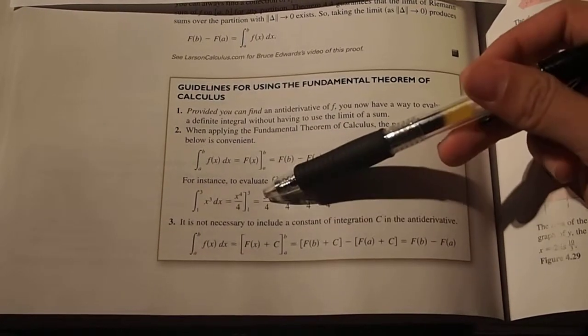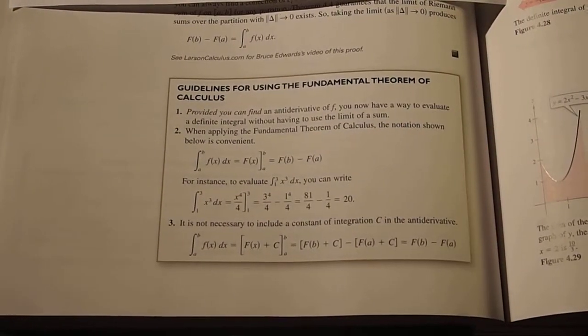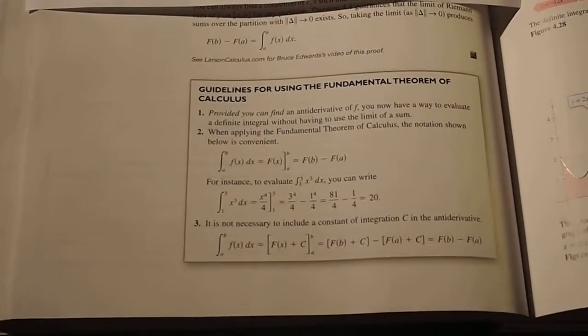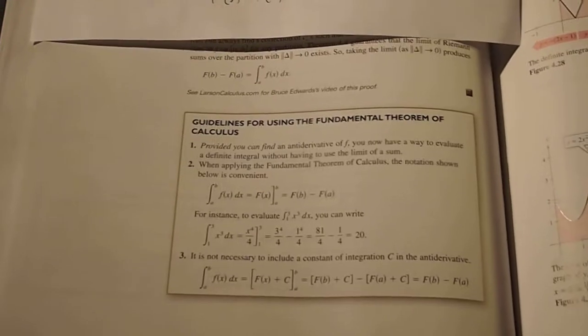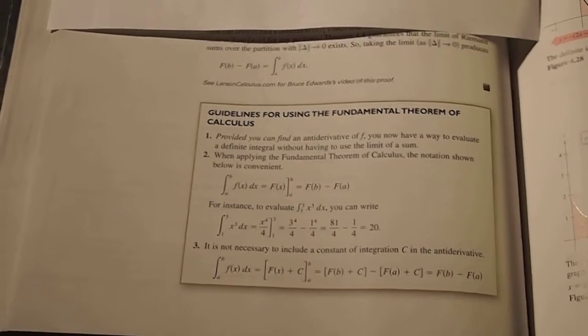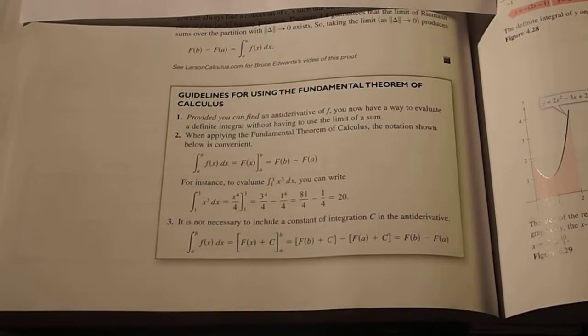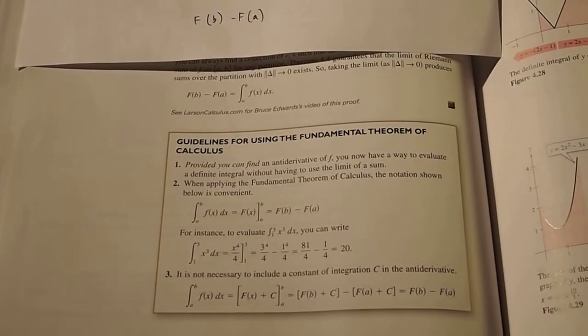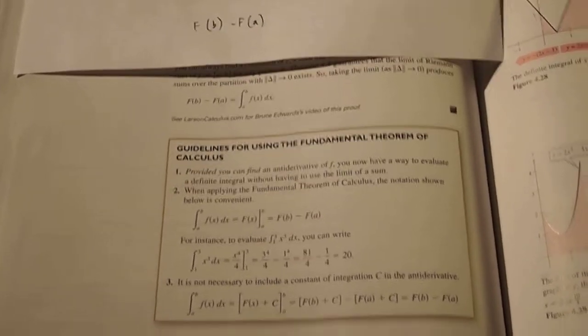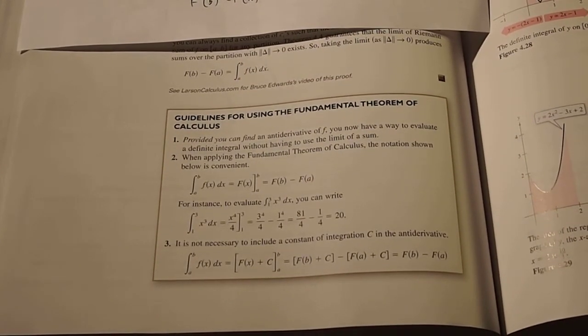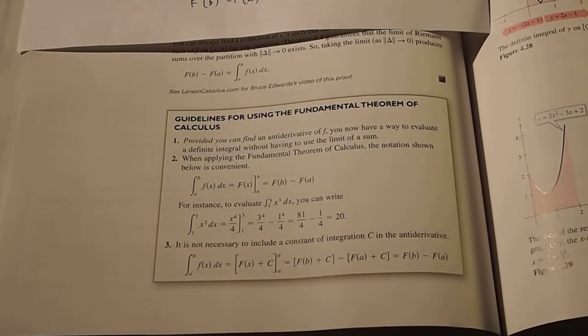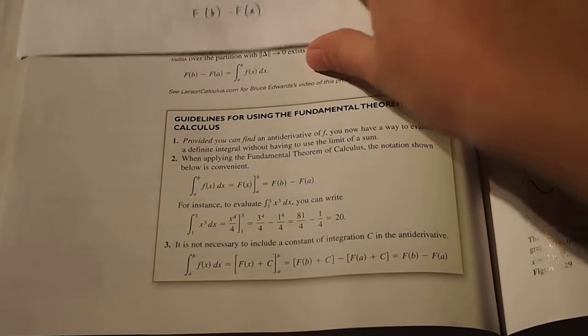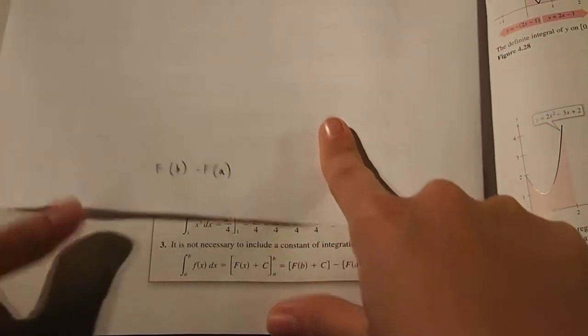And then lastly, it is not necessary to include a constant of integration in the anti-derivative. So normally when you take the anti-derivative of a function, you would have to do plus C, but for definite integrals, you don't need to use the plus C, because it's not important in finding the actual area under the function, because the area under the function of a definite integral should be an exact value, or a numerical value.